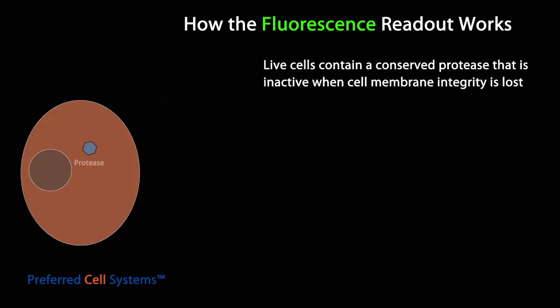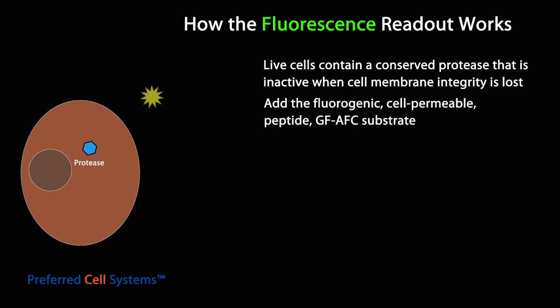Live cells contain a protease that is both conserved and constitutive. This serves as a viability marker. The assay kit contains a cell-permeant peptide substrate called glycyl-phenyl-alanyl-aminofluorocoumarin, or GF-AFC for short.